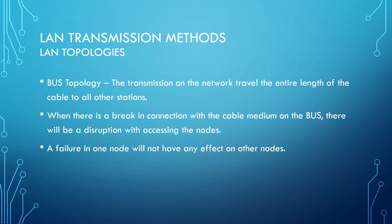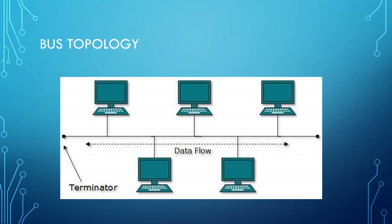Bus topology: the transmission on the network travels the entire length of the cable to all stations. When there is a break in the cable medium, there will be a disruption accessing nodes; however, a failure in one node will not necessarily affect the other nodes. A diagram example shows terminators at both ends, with the transmission medium running in the middle connecting the computers, with data flowing in both directions.